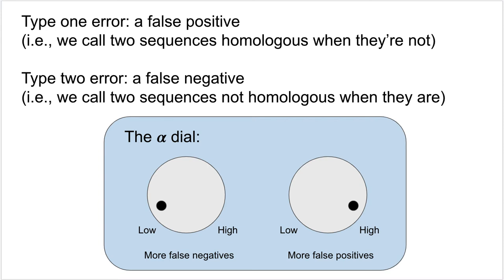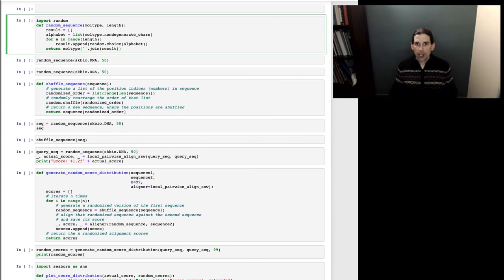Now I want to jump over to a Jupyter notebook and continue working through some of the code from the sequence homology searching chapter. Specifically, we are going to develop an approach for computing a p-value from sequence alignments. I have just started up my Jupyter notebook server and am picking up with the code from the sequence homology searching chapter.